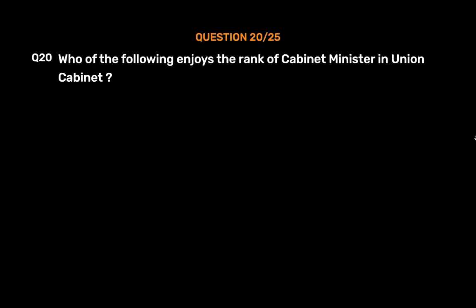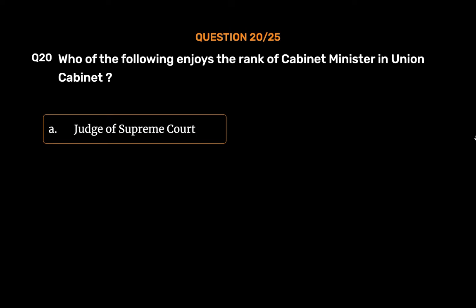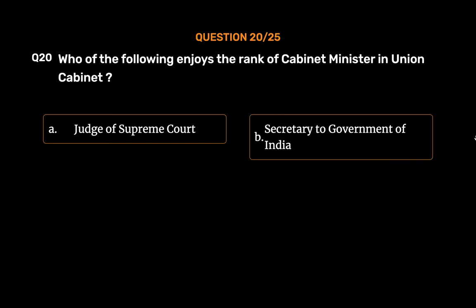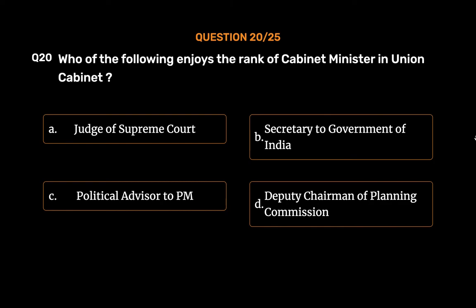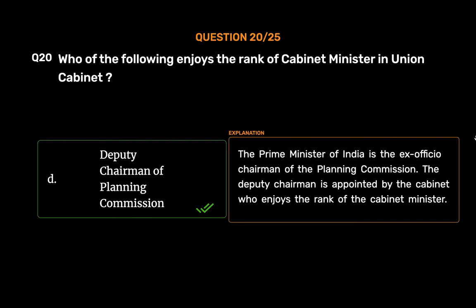Question No. 20. Who of the following enjoys the rank of Cabinet Minister in Union Cabinet? Option A. Judge of Supreme Court. Option B. Secretary to Government of India. Option C. Political Advisor to PM. Option D. Deputy Chairman of Planning Commission. The correct answer is Option D, Deputy Chairman of Planning Commission. The Prime Minister of India is the ex-officio chairman of the Planning Commission. The Deputy Chairman is appointed by the Cabinet and enjoys the rank of Cabinet Minister.